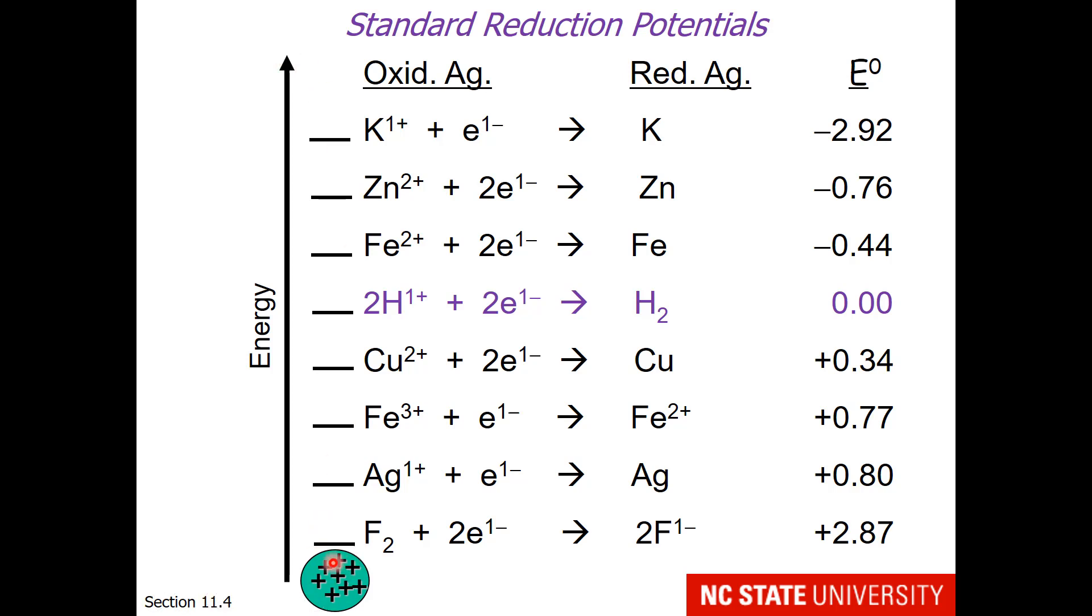So our reduction potential table in the book actually very nicely lines up with nuclear energy levels. If we consider the nucleus down below here, oxidizing agents have empty orbitals, and you can see that potassium has the empty orbital that is furthest from the nucleus. Reducing agents have electrons in their valence orbitals, and we can see that F1- has electrons that are very close to the nucleus. And if you're wondering why sometimes there's one electron and sometimes there's two, I've paid attention to the reaction. The first reaction involves the addition of one mole of electrons, and the second reaction involves two moles of electrons.